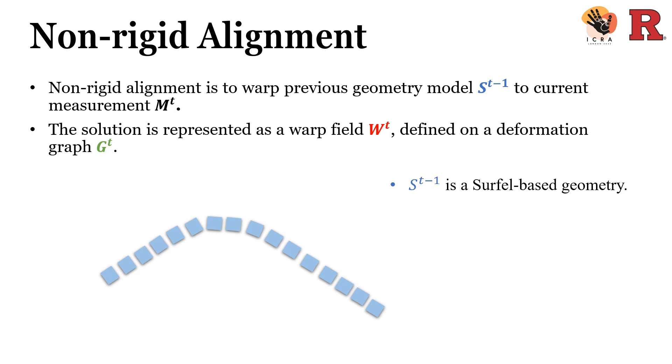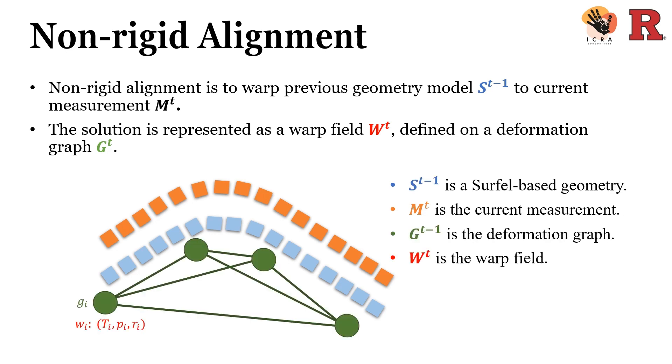Here S^(t-1) is a surfel-based geometry. M^t is the current measurement. G^(t-1) is the deformation graph. W^t is the warp field.